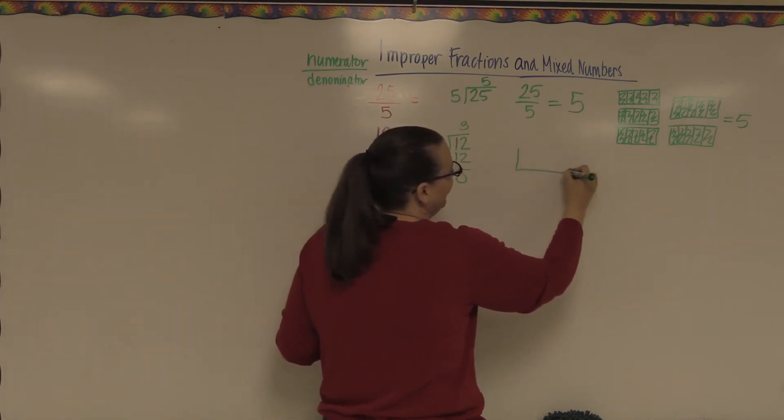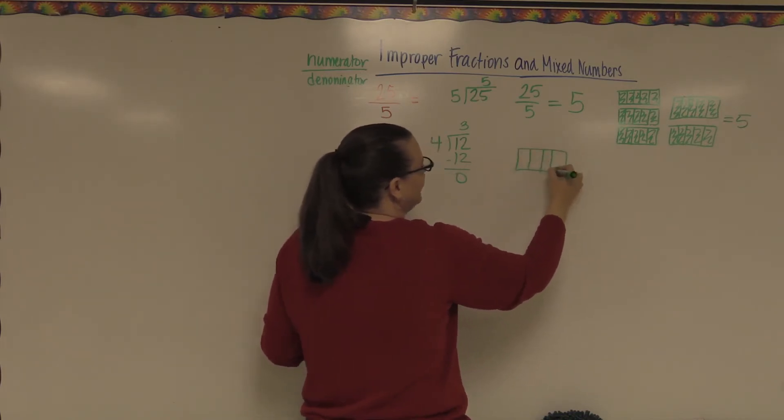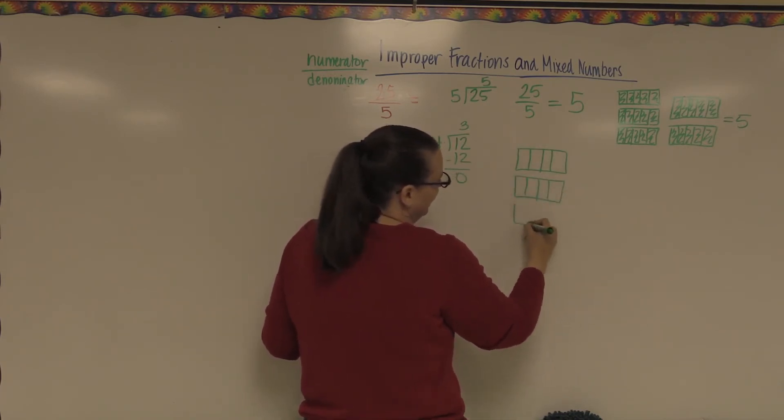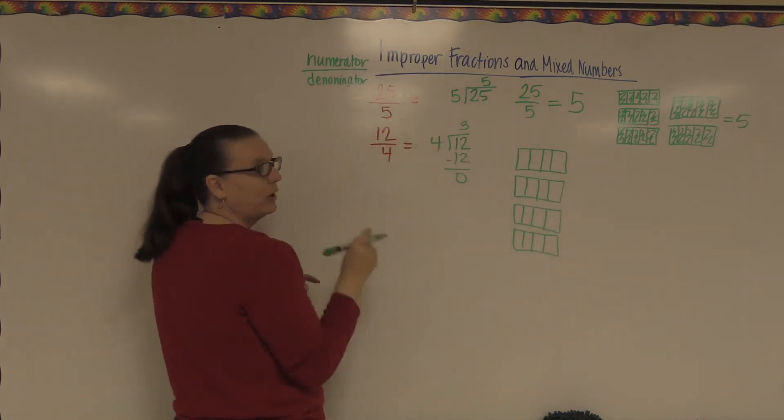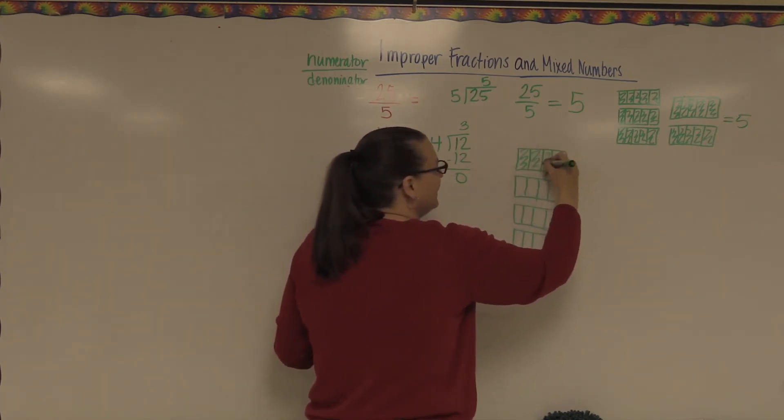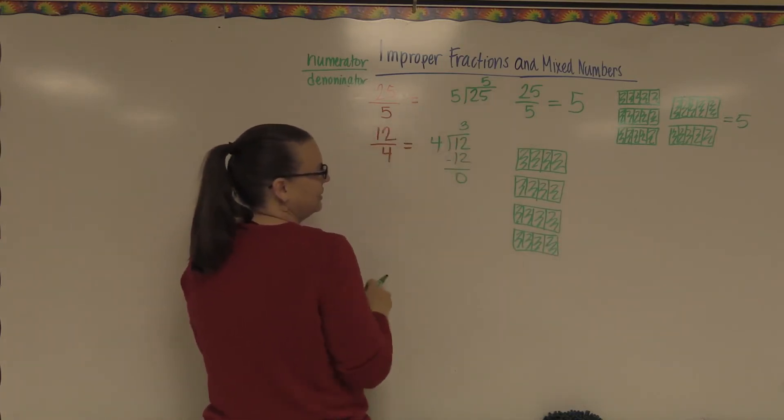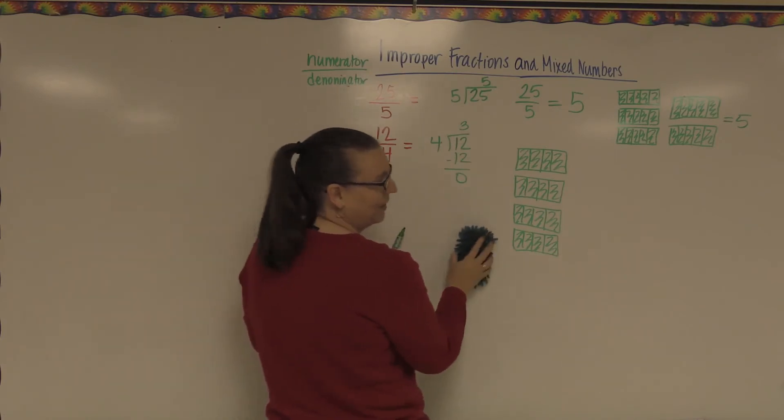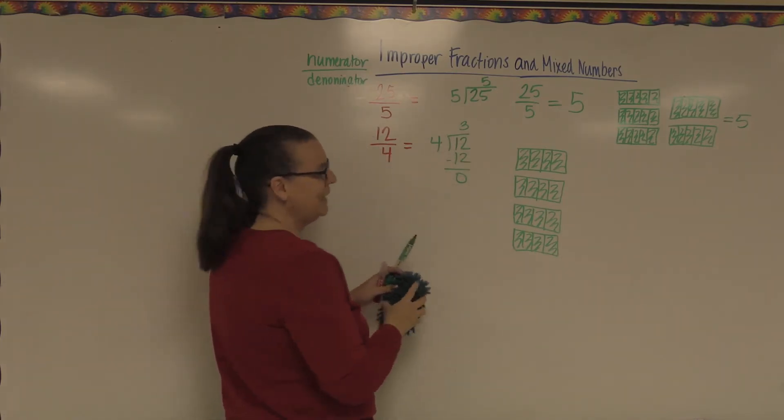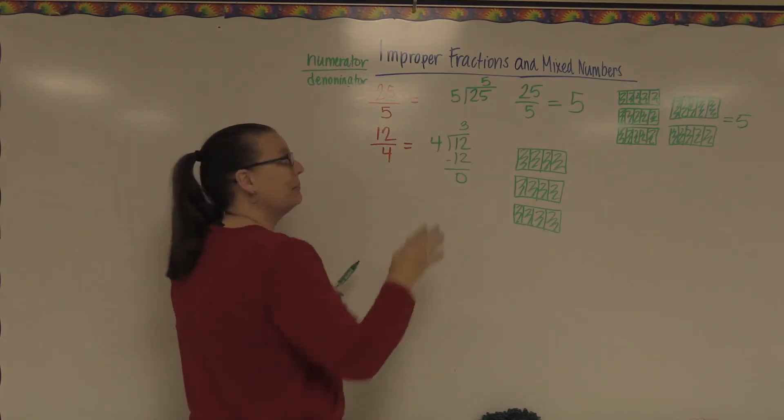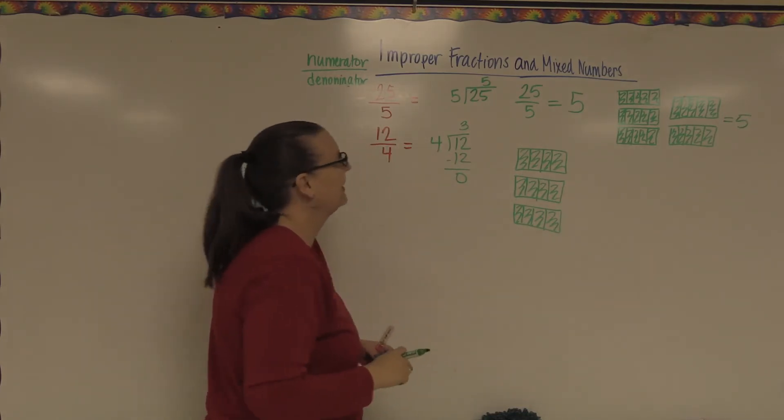That means that if I draw my fraction bars here and they have four pieces in them because four is my denominator. And this tells me I have 12 little pieces. If I color in my 12 little pieces, you'll notice that I made three whole chocolate bars. And just like my division problem, 12 divided by four is three. You'll also notice that I made three bars.